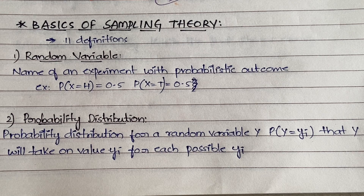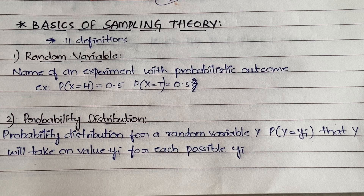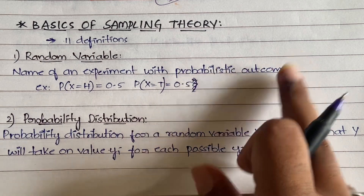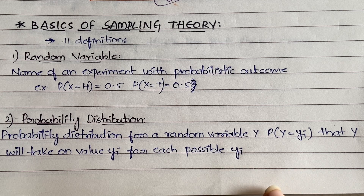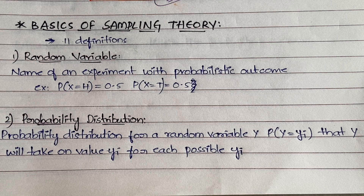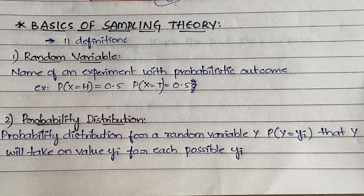First is random variable. If you have studied probability and statistics, you will have an idea about this. A random variable is the name of an experiment with a probabilistic outcome, which means the outcome may be anything. For example, when you toss a coin you may get head or tail. Before tossing the coin you don't know the result, so the outcome is not known before the experiment.